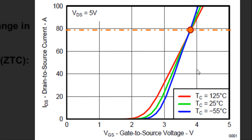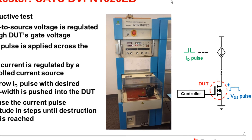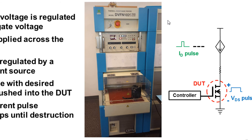There's no guarantee that thermal runaway will occur, and there's no simple model for predicting when it will occur, because there are many variables at play — the cell density structure of the MOSFET itself, or the ability of the package to dissipate heat uniformly. That's why thermal instability in this region needs to be measured for each individual device. Let's take a look at the tool that allows us to measure the SOA — the computer-aided test system, the DVFN-1020ZB.